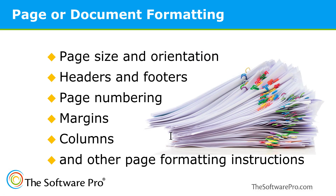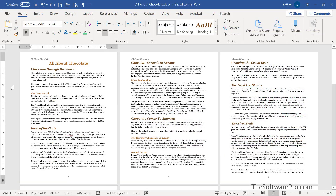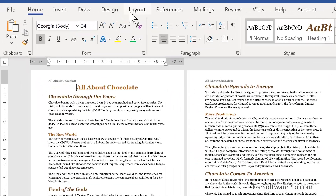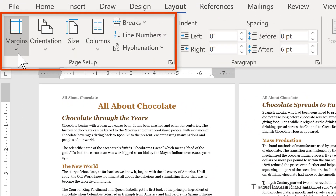Document or page formatting usually determines the appearance of the entire document regardless of its size. It includes margins, page size and orientation, headers and footers, page numbering, columns, and other page formatting instructions. By default, one document has one set of page formatting instructions. Most page formatting is handled from the page setup group under the layout tab, where we can see things such as margins, orientation, size, and even columns.